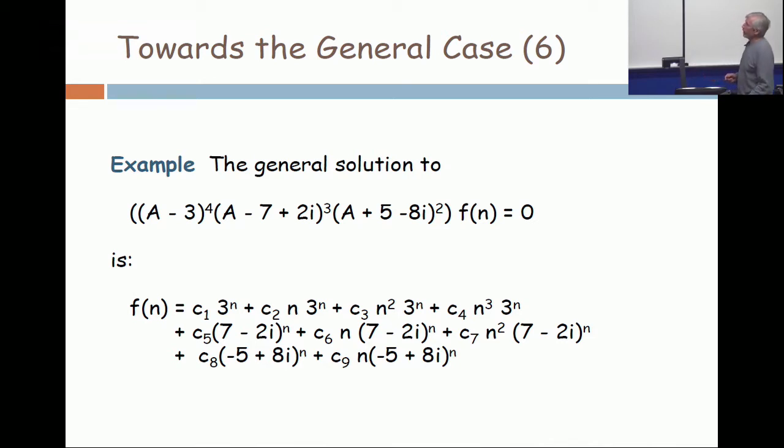The term A plus five minus eight i is a factor twice. So minus five plus eight i is the root, and it's a root of multiplicity two. So there are two terms in the basis for those: (-5+8i)^n and n(-5+8i)^n.